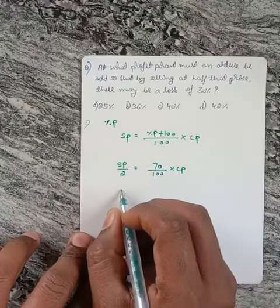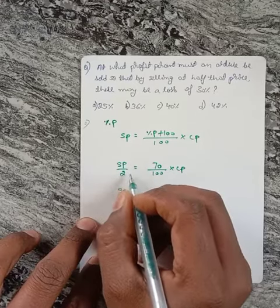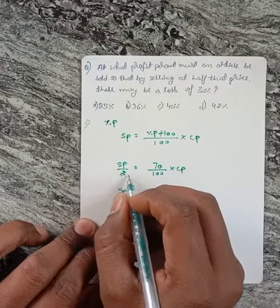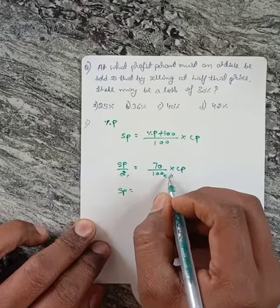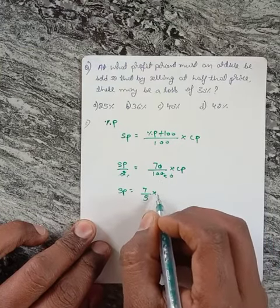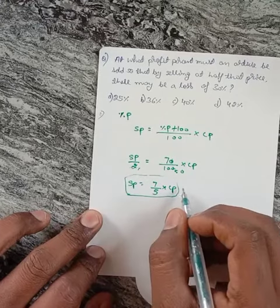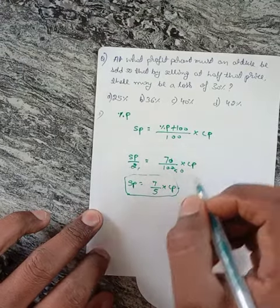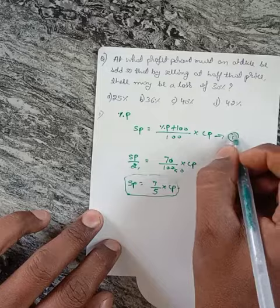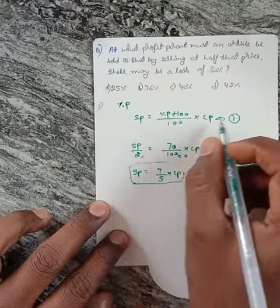Then, when we simplify this one, it will become 7 by 5 of cost price. Substitute this one in equation 1, that is this one.